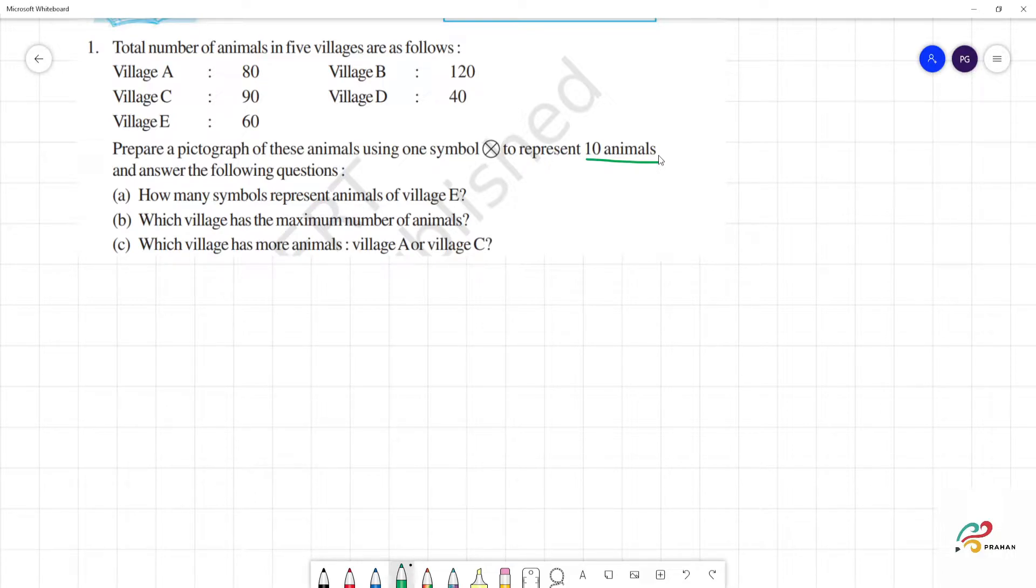Shall we draw the pictograph? First, village name. Here is the number of animals. So, the first one is village A. Village A has 80 animals. In this, we say this is equal to 10 animals.